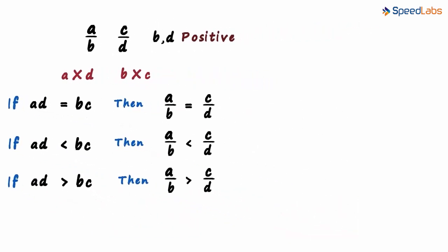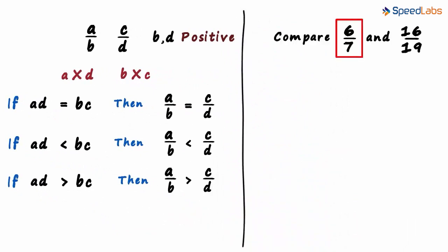Let's look at an example we saw a while back. We had to compare 6 by 7 and 16 by 19. So to compare these two rational numbers, all we need to do is compare the product of this integer with this one, with the product of this integer with this one.